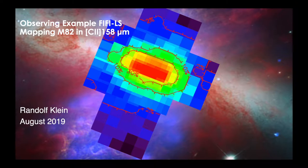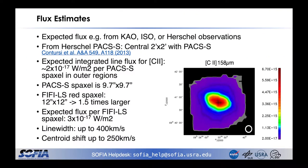The proposal is to observe the C-plus line in the central area of M82. Always start your observing planning by getting flux estimates. State your sources or assumptions for your flux estimates clearly in the technical feasibility section of your proposal. You can get expected fluxes from KAO, ISO, or Herschel observations for the far-infrared where FIFI-LS is observing.